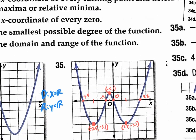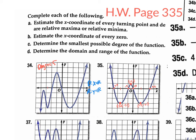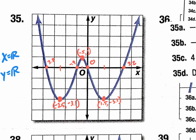Part C for number 35: determine the smallest possible degree. The direction goes down — one, up — two, down — three, up — four. So this has to be at least a fourth degree function. The amount of directions tells you the degree it has to be.